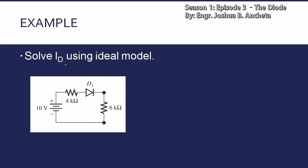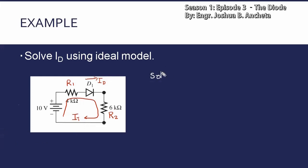Another example: solve the diode current using ideal model. So in this circuit, meron tayong series connection — the supply is 10 volts, meron tayong dalawang resistors dito. Lagyan natin ng label: this is R1 and this is R2. Meron tayong diode, pero i-coconsider natin na ideal model. Pinapahanap dito yung diode current. Assuming ito yung diode current flow natin, and then this is a series connection, so meron tayong flow ng total current. Using Ohm's law, this is voltage over resistance — the total voltage over the total resistance. Pwede rin nating gamitan ng Kirchhoff's voltage law.